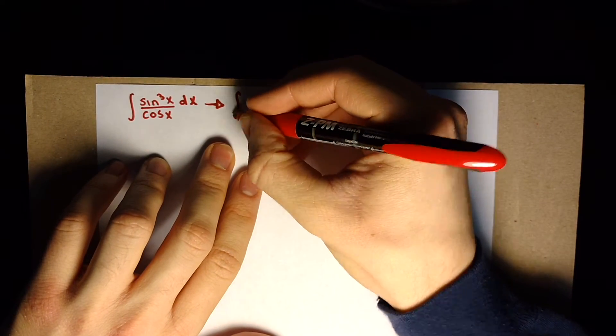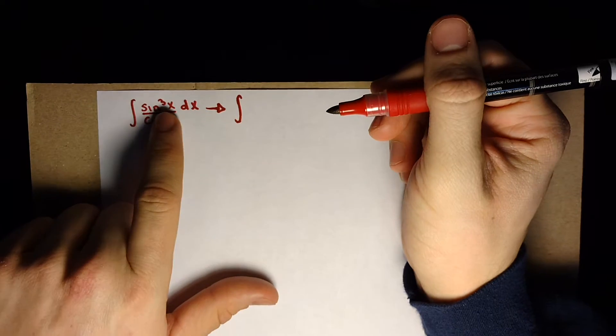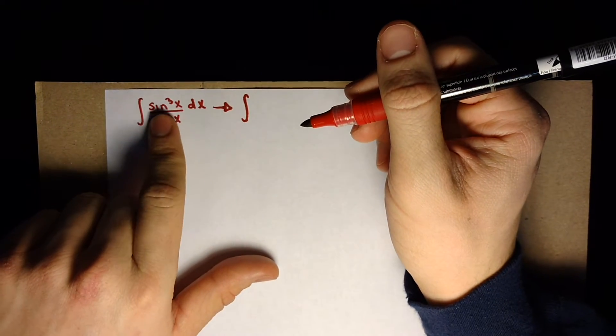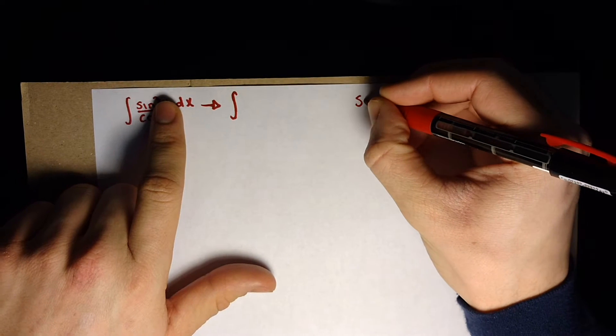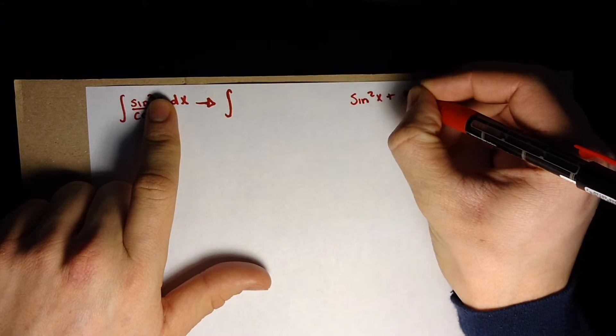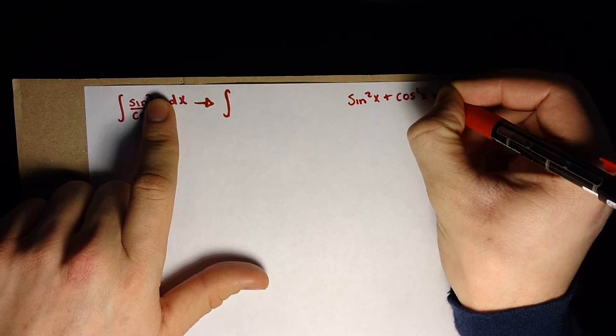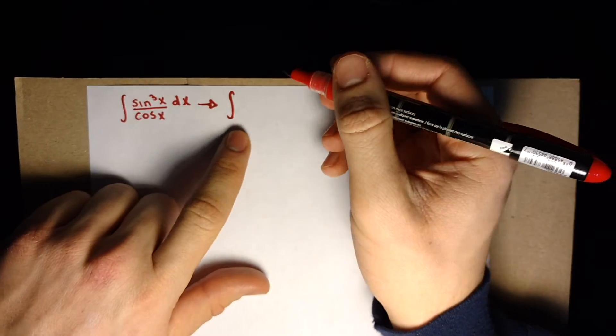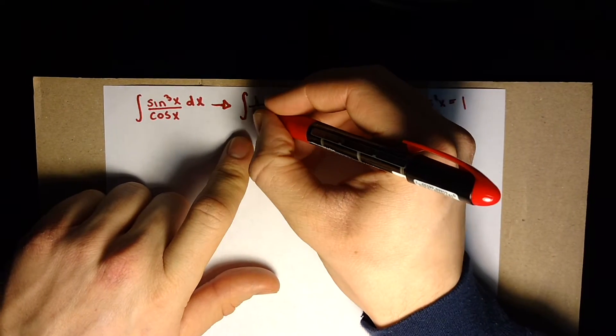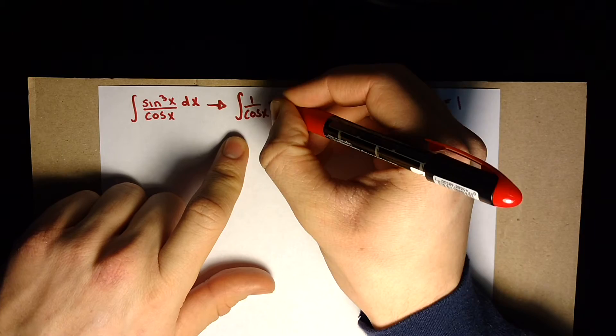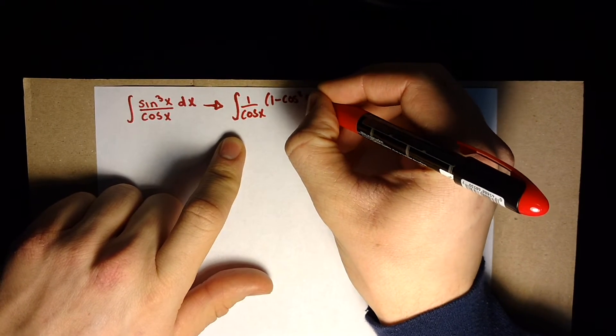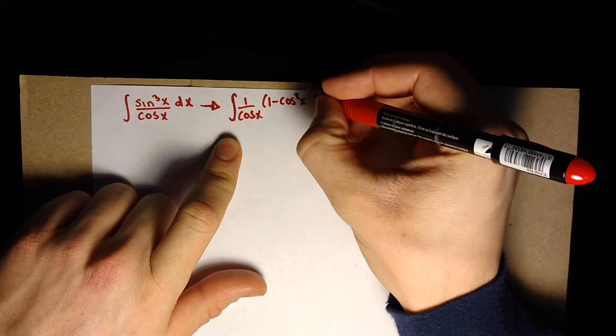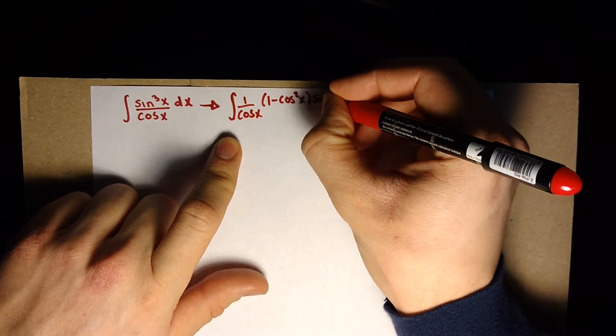First we're going to split the numerator into two terms: sine squared x times sine of x. Then using the trigonometric identity that sine squared x plus cosine squared x equals 1, the top becomes 1 over cosine of x times 1 minus cosine squared x times sine of x.